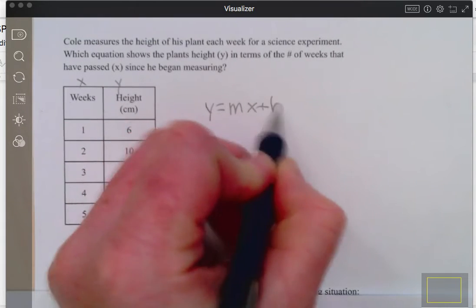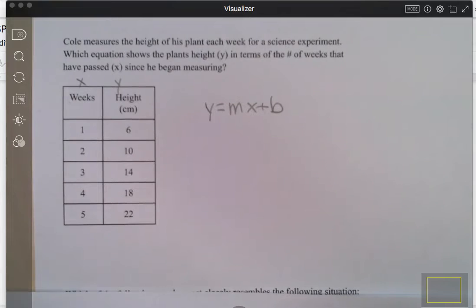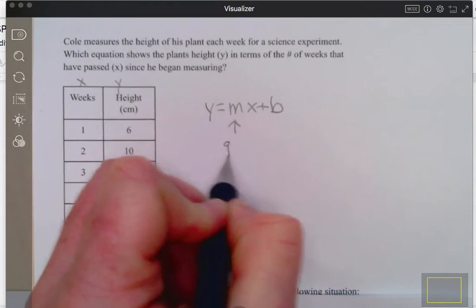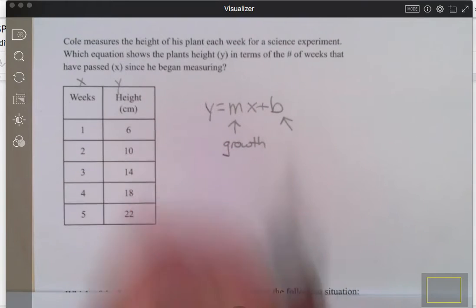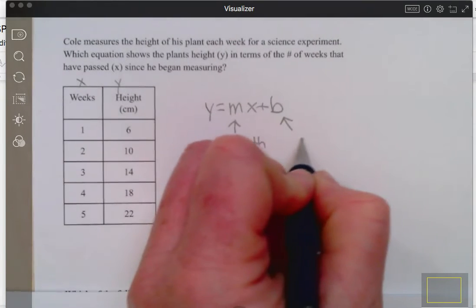We are linear. Remember that M is your growth, B is your zero value, or zero value.